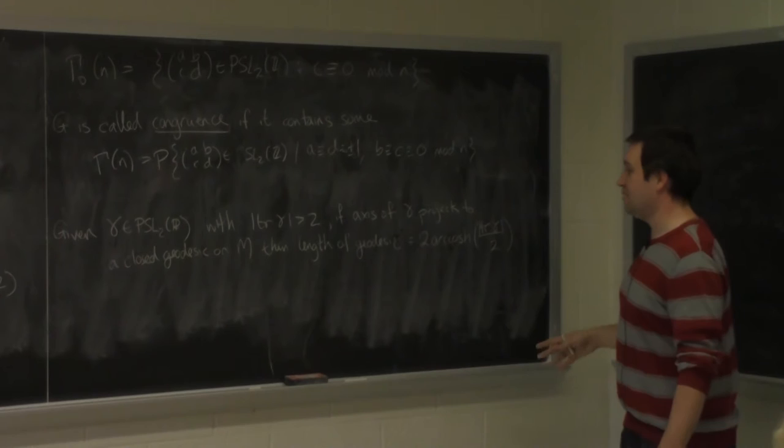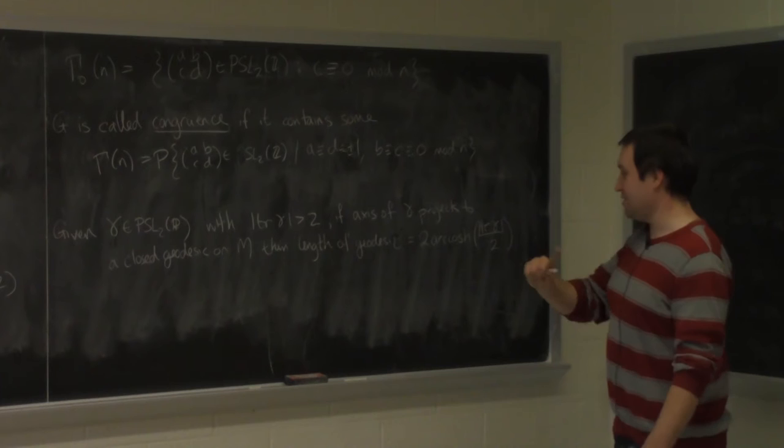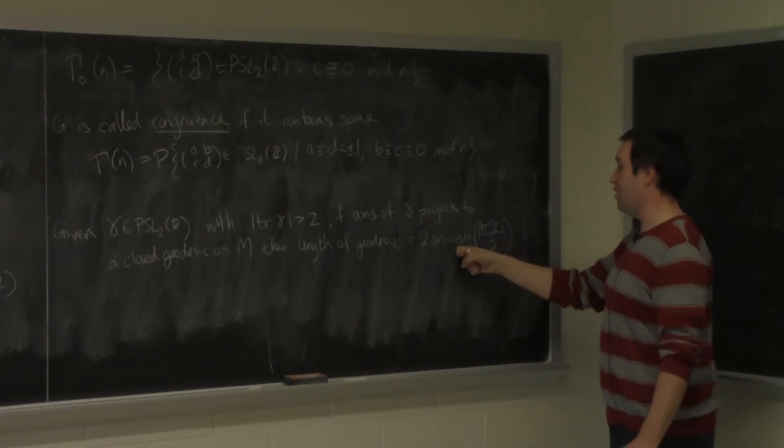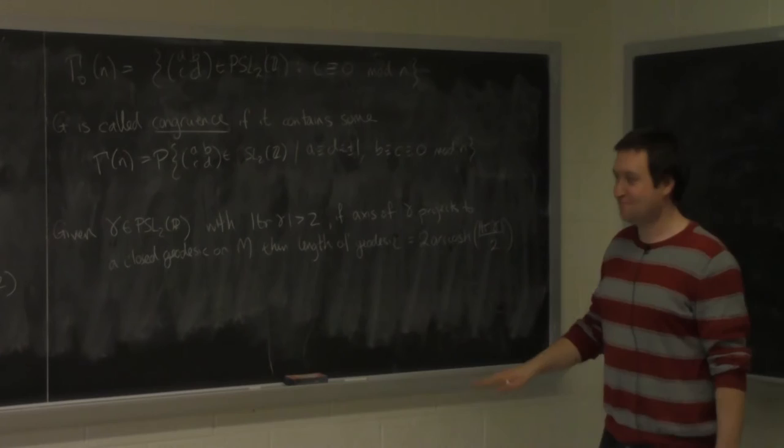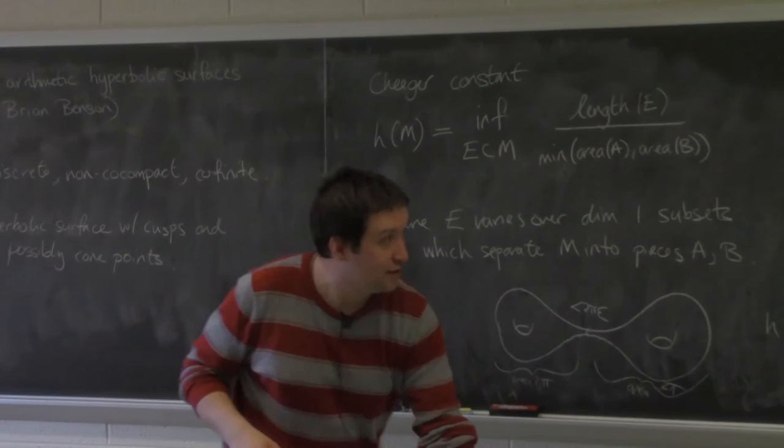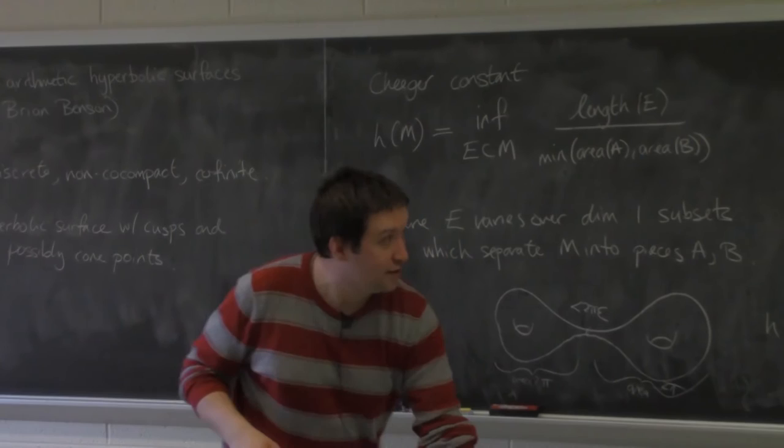I'm warning you in advance: I'm probably going to say things like 'a geodesic of trace 3.' When I say a geodesic of trace 3, I mean a geodesic that corresponds to a hyperbolic element of trace 3, which therefore has length 2·arccosh(3/2). That's the preliminaries — any questions so far?